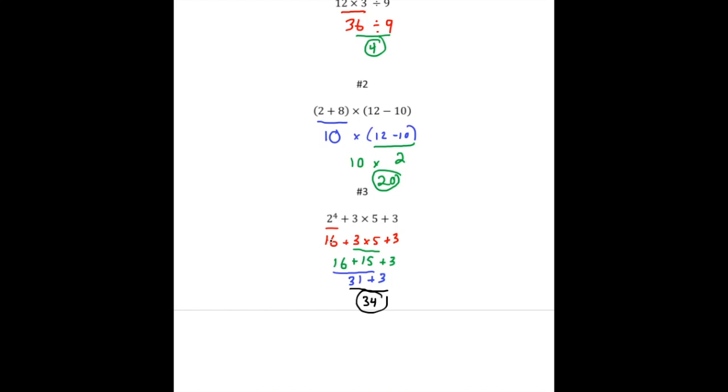So that's where that 16 comes from. And then notice I wrote down the rest of the problem. And then now we have 16 plus 3 times 5 plus 3. Well now we have to multiply. So 3 times 5 gives us 15.